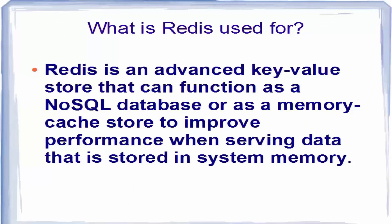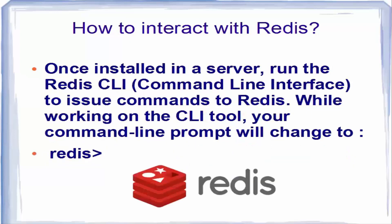Redis is an advanced key-value store that can function as a NoSQL database, a memory cache store to improve performance when serving data stored in system memory, or as a message broker. It can be used in place of caching systems such as Memcached. Redis can be installed on a server and interacted with using a command line tool called redis-cli.